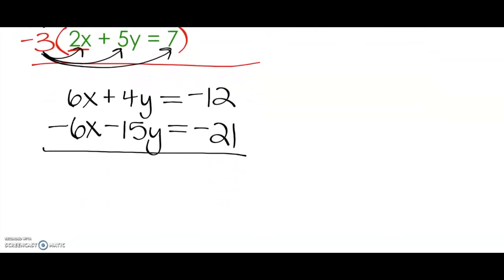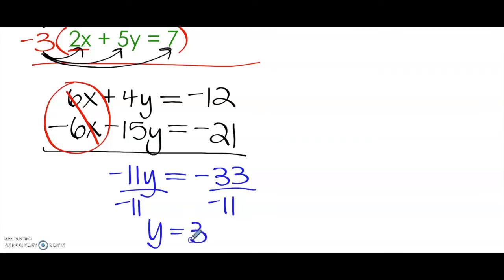So now we have got a situation where we can eliminate x because 6x combined with negative 6x is zero, which is what we were going for there. Let's combine 4y and negative 15y. That's going to give us negative 11y. And then combine negative 12 and negative 21, and we get negative 33. We're going to divide both sides by negative 11 using inverse operations to solve. Y is going to equal positive 3.